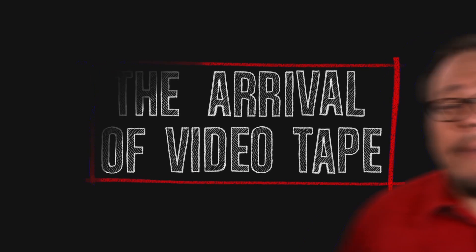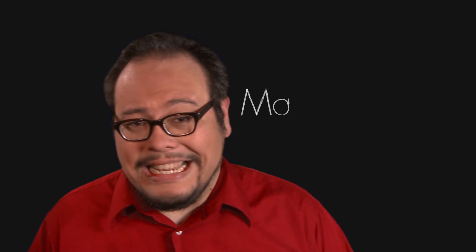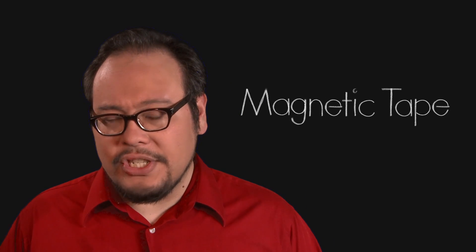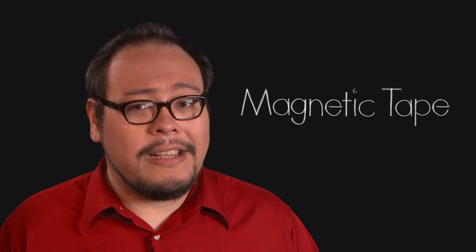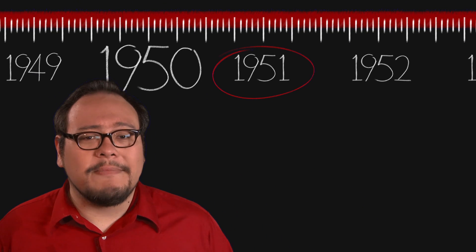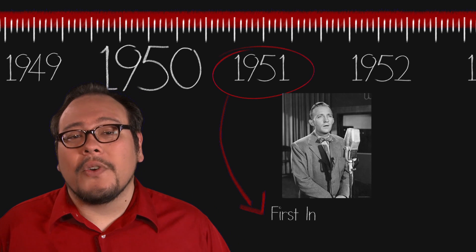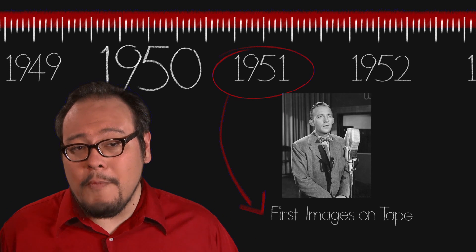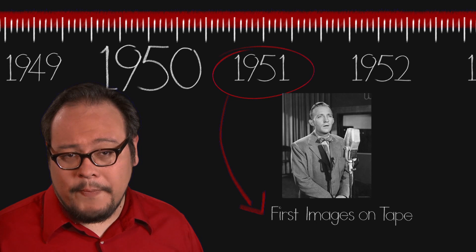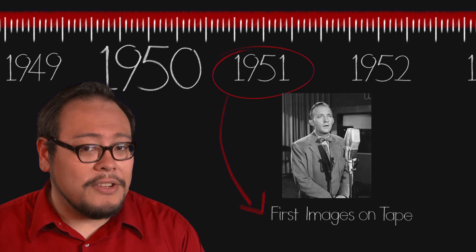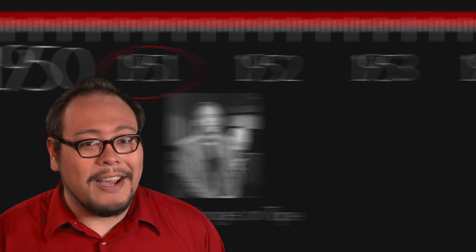Magnetic tape had been used for audio recording for years, but there were still some significant technological hurdles to actually getting video images onto a tape. In 1951, engineers working for Bing Crosby's production company were the first to record video images onto magnetic tape. Unfortunately it looked terrible, but it was still an image and it proved that it could be done.